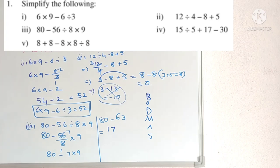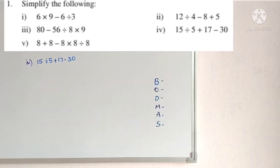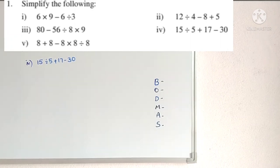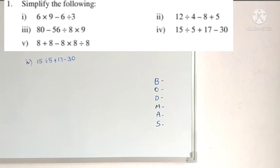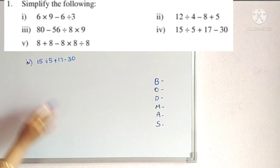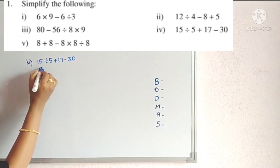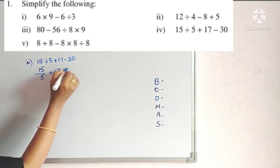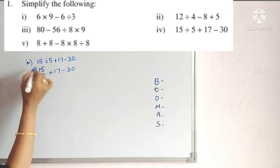Fourth problem: 15 ÷ 5 + 17 − 30. Division, addition, and subtraction are there. By BODMAS, first do division: 15 ÷ 5 = 3. So we get 3 + 17 − 30.